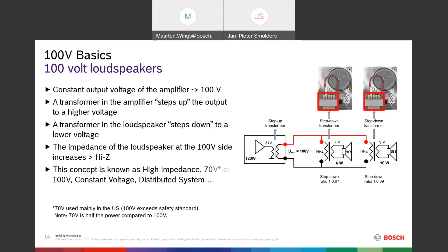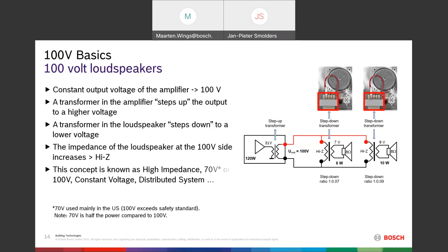That is why we also call this high impedance — high Z — instead of low Z. It is also known as 70-volt or 100-volt systems, constant voltage, or distributed systems. All these terms refer to the same thing.